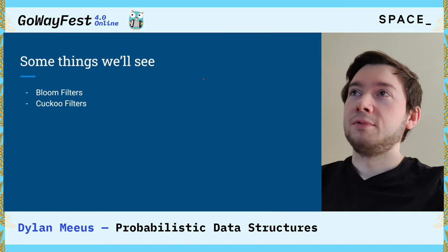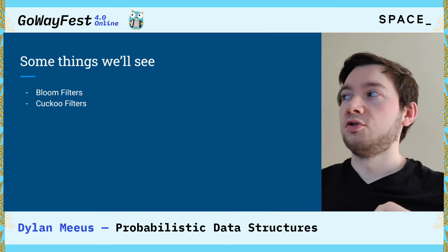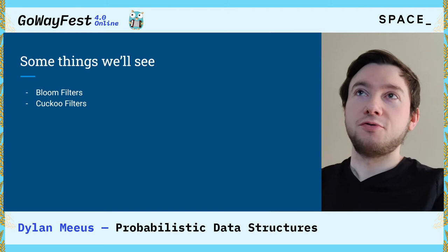Some things that we will talk about today are bloom filters and cuckoo filters. These are two types of probabilistic data structures. There are actually a lot more — these are just two that I picked out.